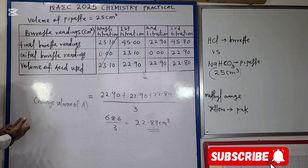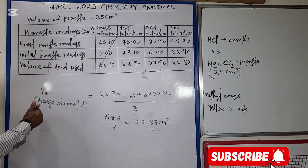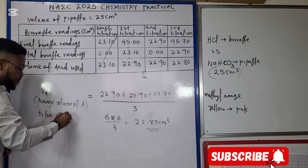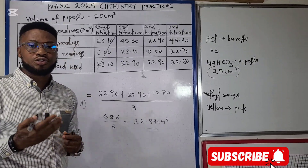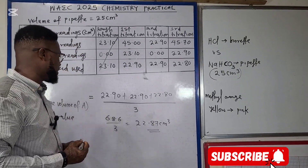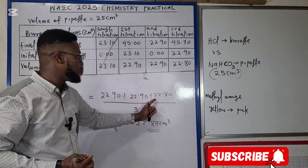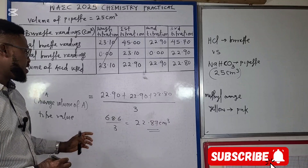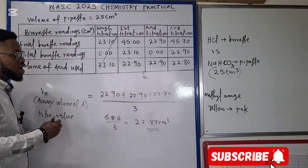The first question asks us to find the average volume of acid used — also called the titre value. Since the results are consistent, every subsequent calculation will make sense. So: (22.90 + 22.90 + 22.80) ÷ 3 gives us an average of 22.87 cm³. This is the VA we will use in all our calculations.